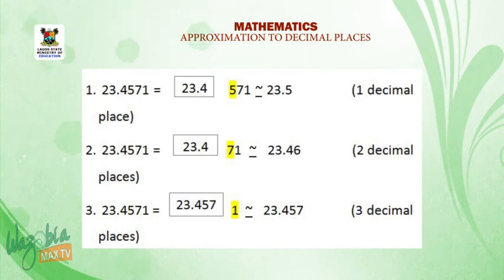Now, number 2, 2 decimal places. We have 23.4571 to 2 decimal places. The 2 digits are 4 and 5. Now, the digit after 5 is 7, which means we round up. And it becomes 1, which is then added to 5. So our result is 23.46.